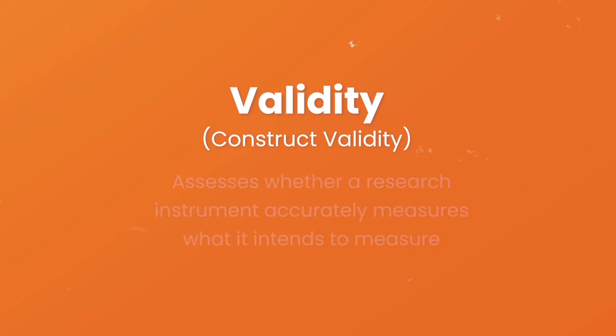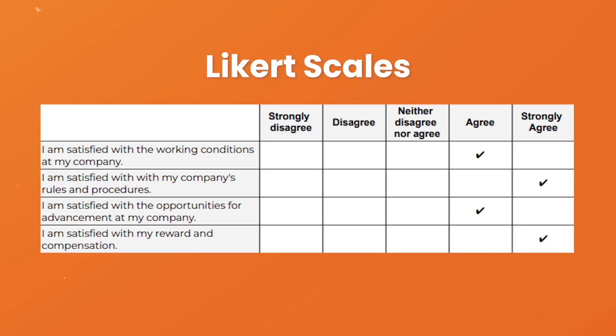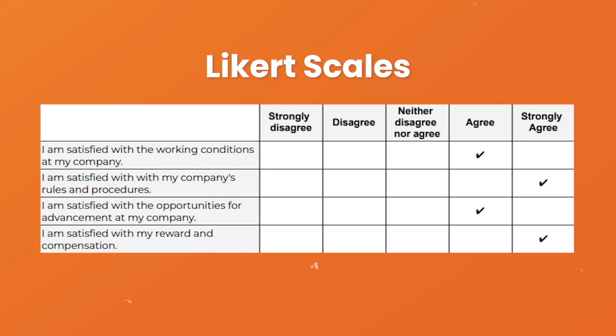Let's start by looking at validity. In simple terms, validity — which is also sometimes called construct validity — is all about whether a research instrument accurately measures what it's supposed to measure. For example, let's say you have a set of Likert scales supposed to measure someone's level of overall job satisfaction. If this set of scales focused purely on pay satisfaction, this wouldn't be a valid measurement, as it's only capturing one aspect of this multi-dimensional construct. In other words, it's not capturing the full picture.